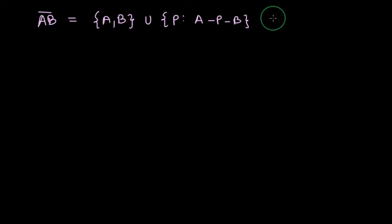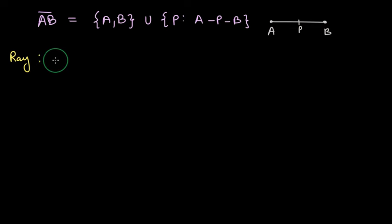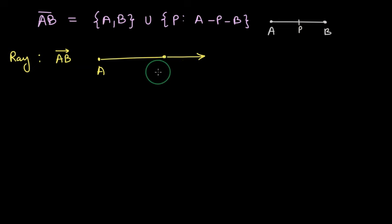And if we were to draw this diagram, this is how it will look: points A and B and some point P between them. Now let us see how we can represent a ray. We want to represent ray AB. Since we are reading it as ray AB, A is the terminal point and the ray extends after B.